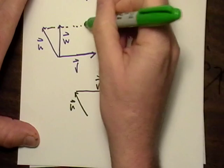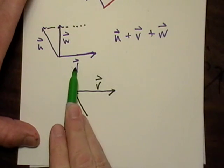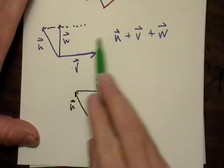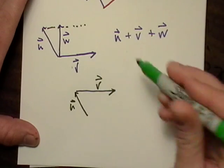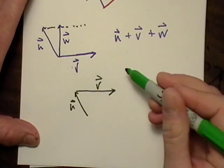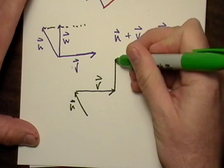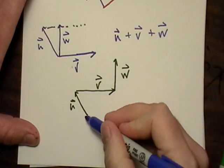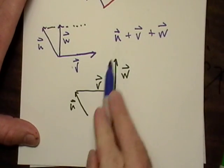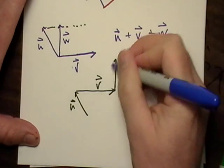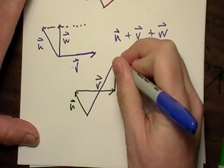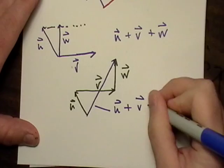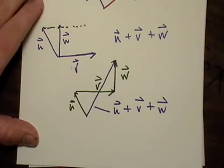Notice that when I put v up there, it still has the same magnitude and the same direction — that's why we can move these around. Now vector w gets added to that, going head to tail. I just need to do a connection: tail of the original vector u to the head of the final one, which is w. And that resulting vector we call u plus v plus w.